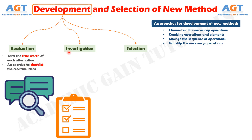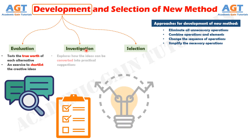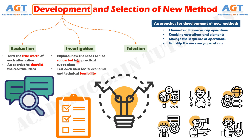Step 2: Investigation. Investigation explores how the ideas cleared at the evaluation stage can be suitably converted into practical suggestions. Investigation usually involves preparation of drawings, making prototypes, and conducting trial runs. The aim is to test each idea for its economic and technical feasibility so that each suggestion is definite and supported by evidence of practicability.